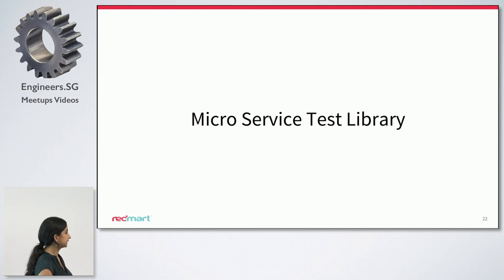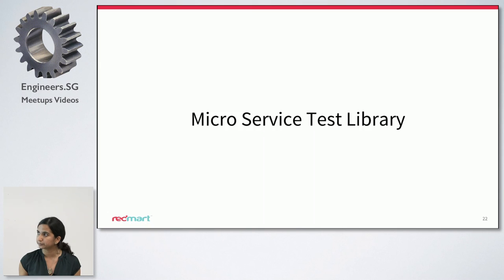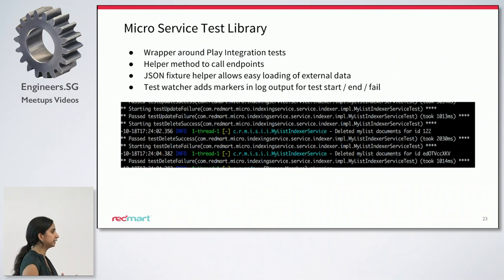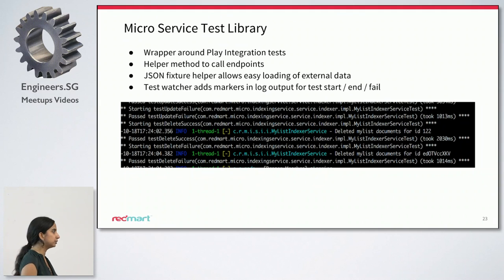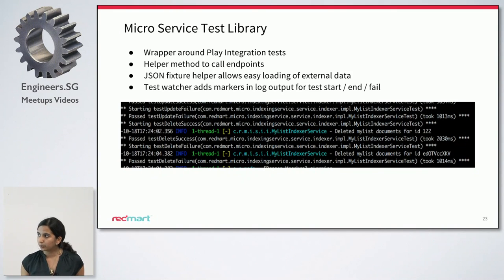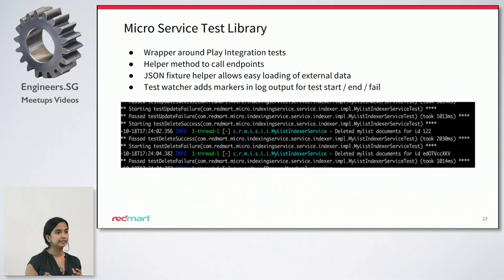Next we're going to talk about the microservice test library. Most of the functionality in the test library is focused around making it easier to write integration tests in our services. The Play framework does have an integration test class which starts up a server for you and allows you to call endpoints through it. However, we found it quite clunky to use. So we've written a wrapper around Play's integration test that sets up all the application-level configuration needed for the test. We also have helper methods which help you call endpoints on the running service. In a lot of cases we need test data set up, so the test library has a helper which will load test data from JSON into your running databases. There's also a test watcher which adds markers into your log output — whenever a test starts, passes, or fails — making it easy to focus on the logs for a particular test.